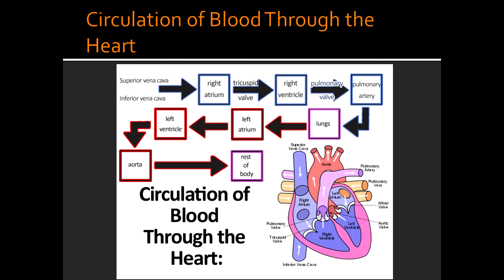From the aorta, the blood gets pumped to the rest of the body. This is basically the circulation of blood through the heart: how it flows, where deoxygenated blood comes from, and where it goes after becoming oxygenated.